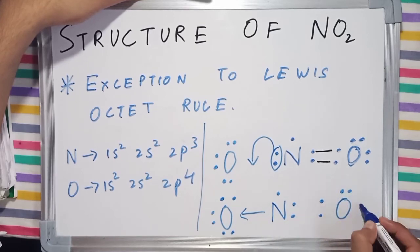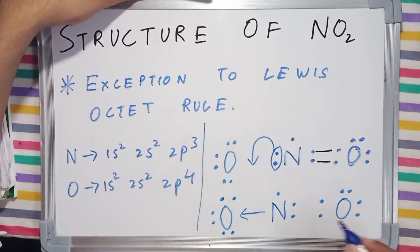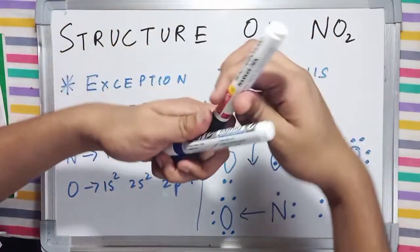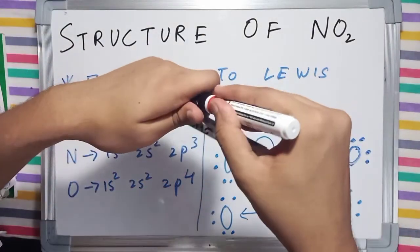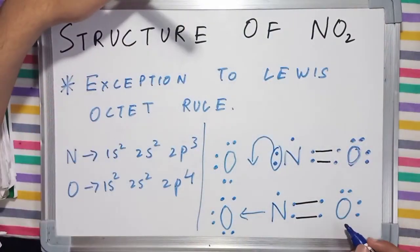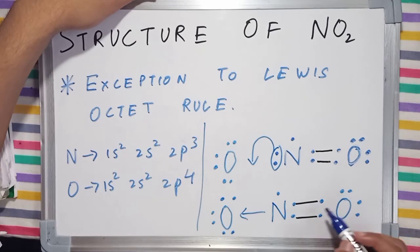And we have the second oxygen, which has made 2 bonds with nitrogen. Now, this oxygen has completed its octet: 1, 2, 3, 4, 5, 6, 7, 8. This has completed its octet.